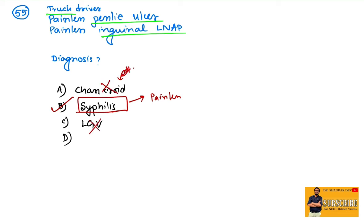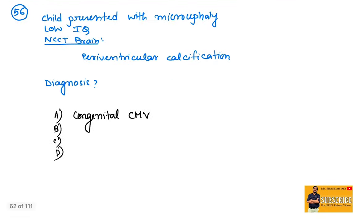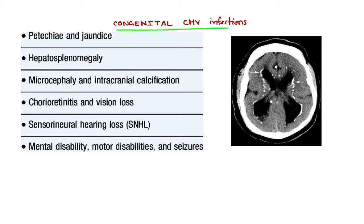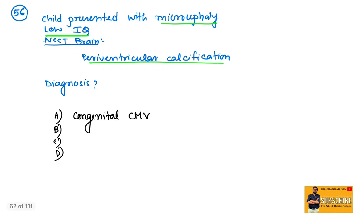Coming to question number 56: child presented with microcephaly, low IQ. NCCT brain shows periventricular calcification. Diagnosis? Microcephaly with periventricular calcification is suggestive of congenital CMV infection. Here you can see periventricular calcification, calcification around the ventricles in NCCT brain. Intracranial calcification along with mental disability and microcephaly are suggestive of congenital CMV. Other features include chorioretinitis, sensorineural hearing loss, seizures, hepatosplenomegaly, etc.